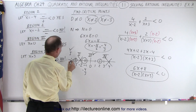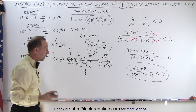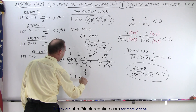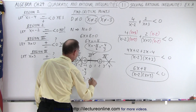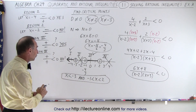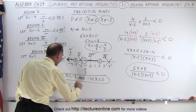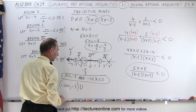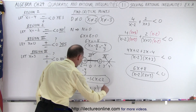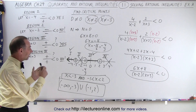So regions 1 and 3 satisfy the inequality. Written mathematically, x must be less than negative 3 (not including negative 3), or negative 4 thirds is less than x which is less than 2. In interval notation, that is negative infinity to negative 3, open parentheses, union with negative 4 thirds to positive 2, also open parentheses — neither endpoint is included. Those are the values of x that satisfy the inequality.